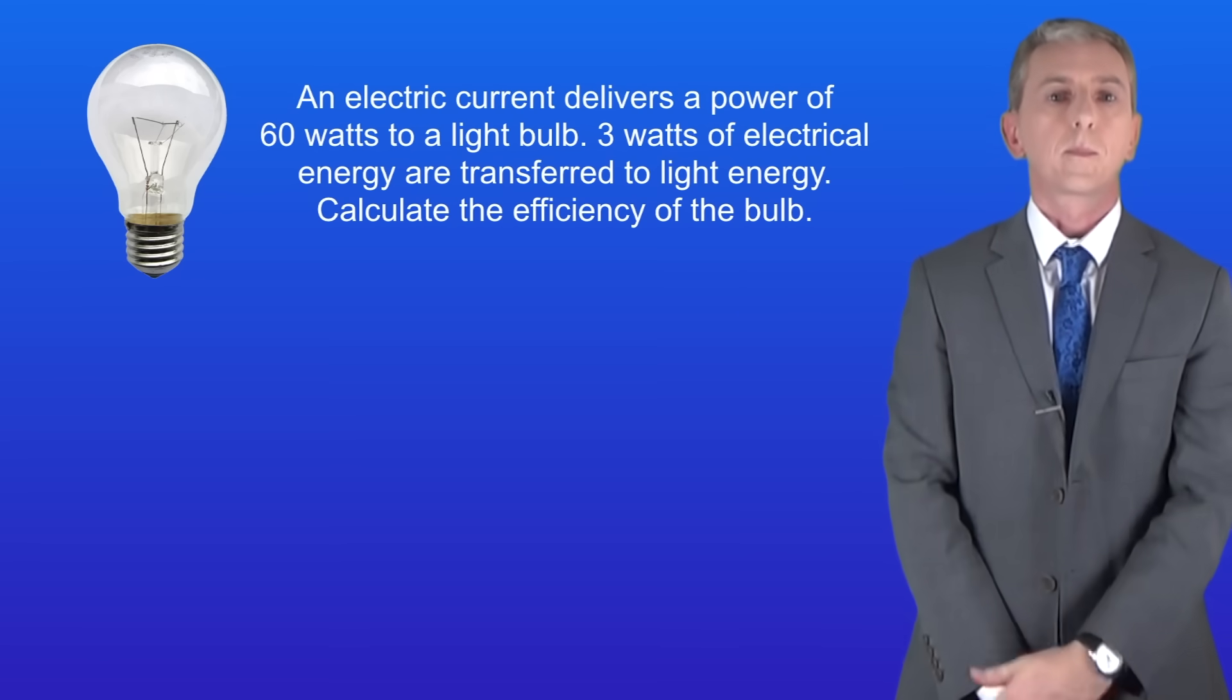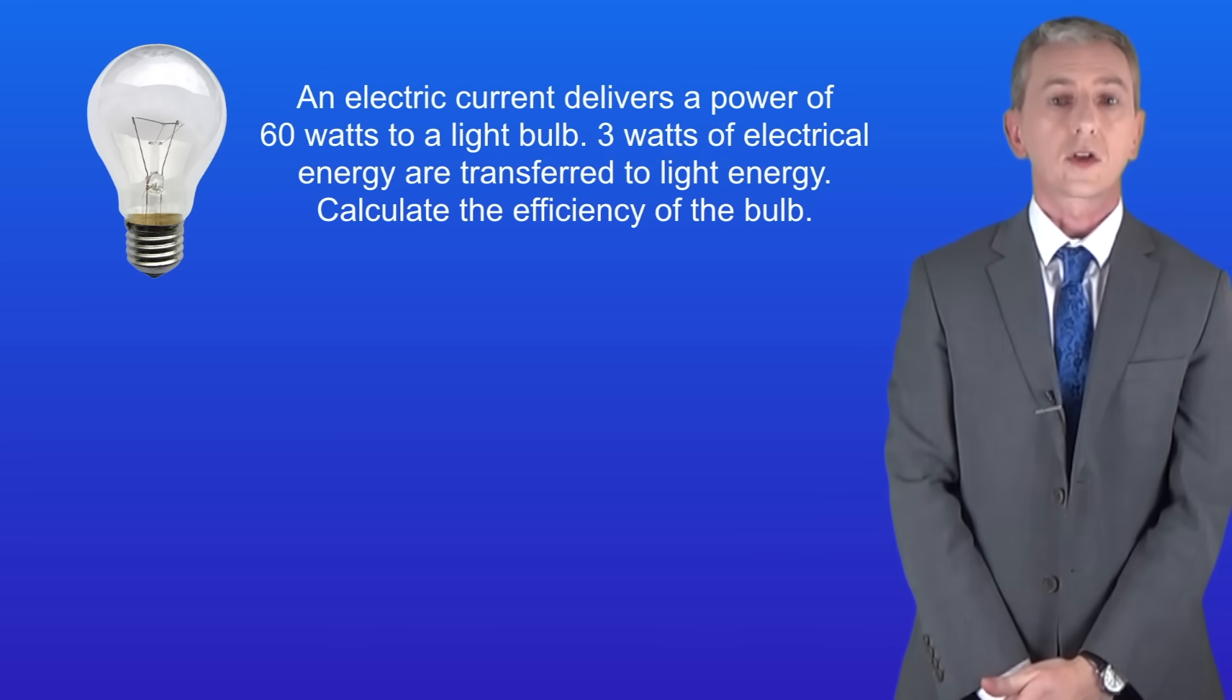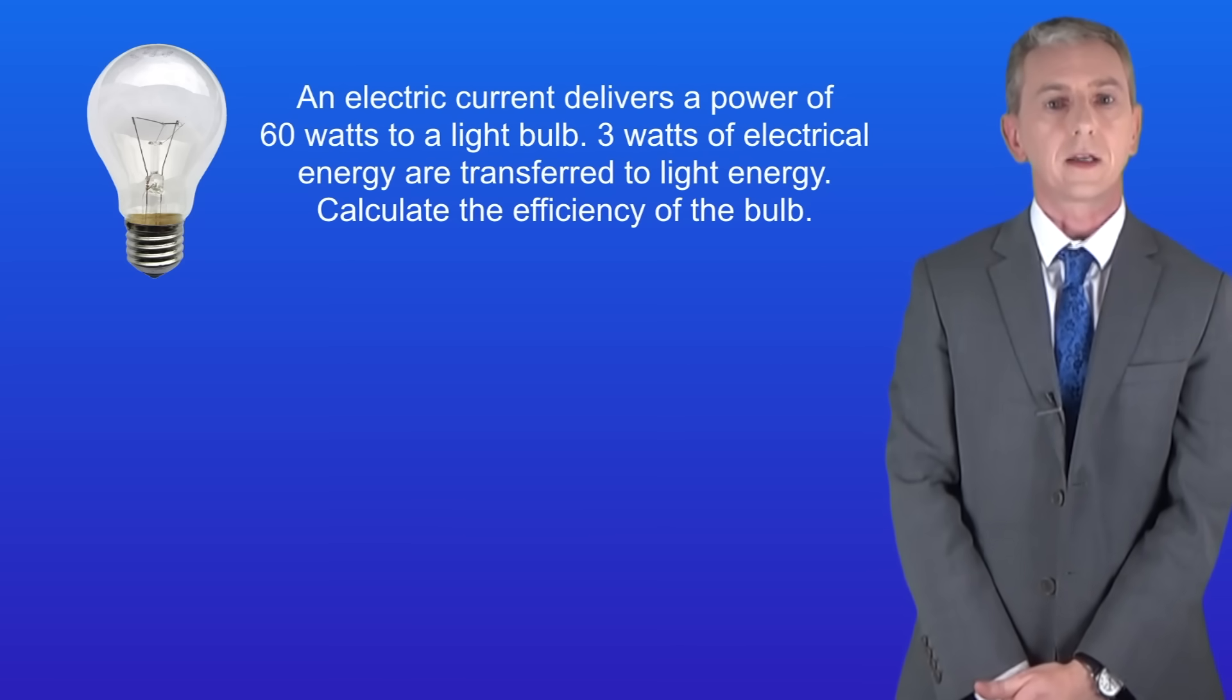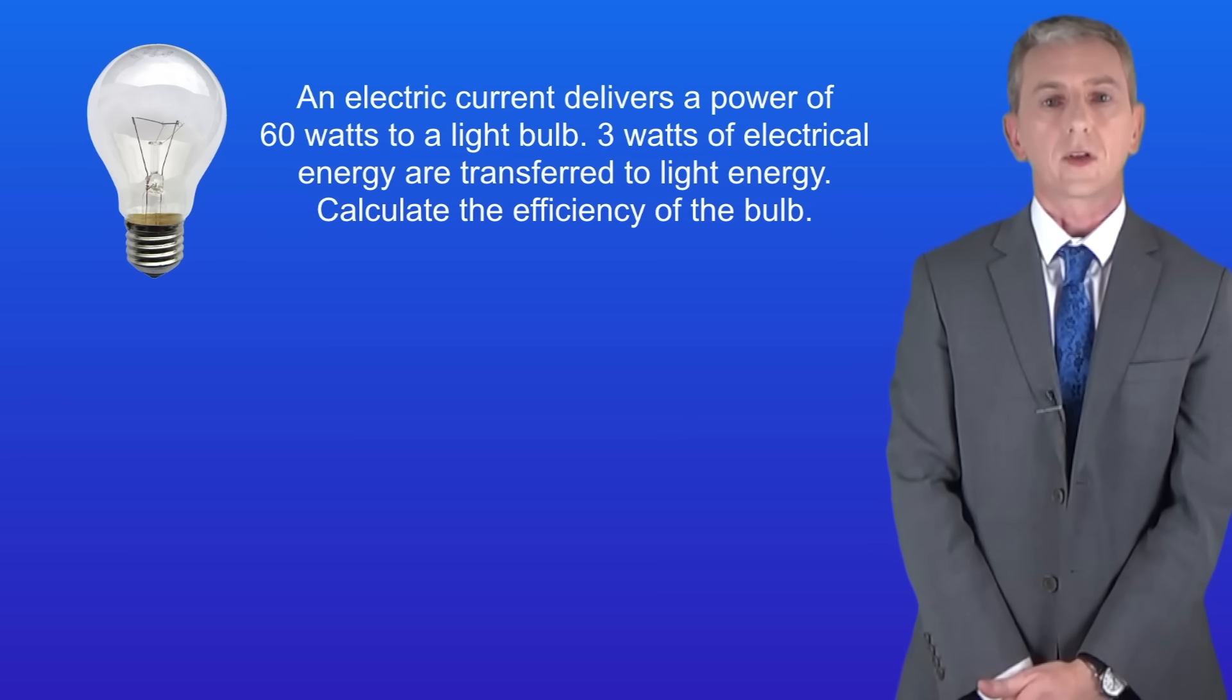Here's a question for you to try. An electric current delivers a power of 60 watts to a light bulb. 3 watts of electrical energy are transferred to light energy. Calculate the efficiency of the bulb. Okay pause the video now and try this yourself.